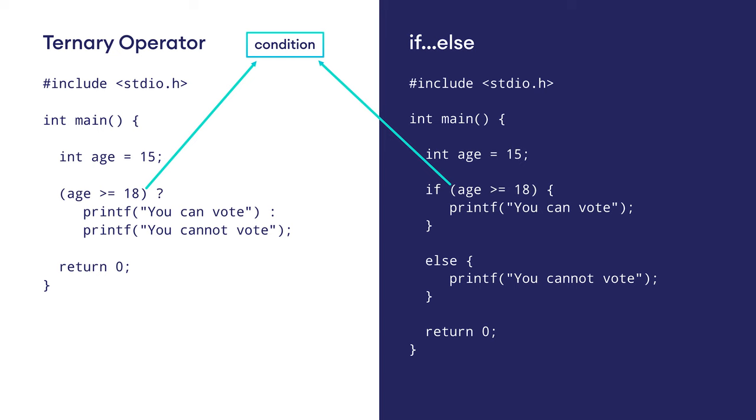In some cases, we can replace the if-else statement with a ternary operator to make our code cleaner and shorter. On screen, you can see a program that checks if you can vote or not — using the if-else statement on the right and the ternary operator on the left. Both programs do the same task, and you can see the ternary operator has made the code cleaner and shorter. In programs where we need to do a single task inside the if-else statement, we can use the ternary operator in place of if-else. However, if there are multiple lines of code inside the if-else statement, we should never replace that with the ternary operator, as it will make the code more confusing and messy.